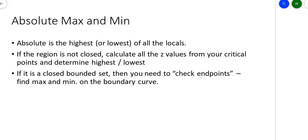Remember in Calc 1 terms, if you had something like this and you wanted to find the max and min on a closed interval, you had to check the endpoints, because in this case the absolute max happens to occur at one of the endpoints, even though the min occurs at an interior point.